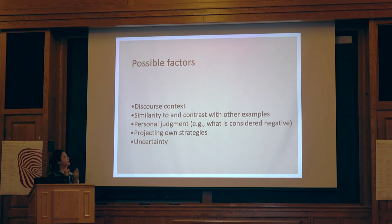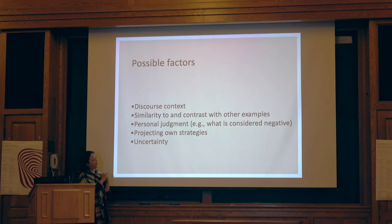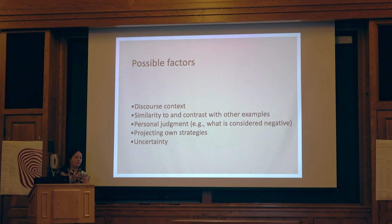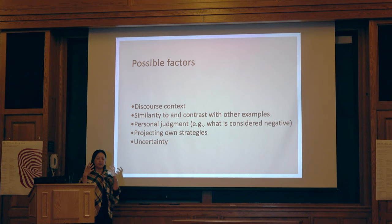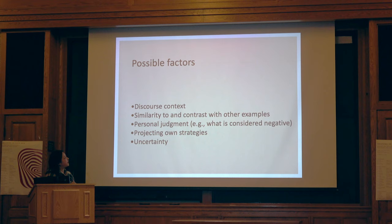Here are some of the things going on in their minds. First, they're thinking about discourse context — where in that excerpt shimau appears and what has been said before. And similarity to and contrast with other examples. They may use analogy with previously presented examples, answering the same way to be consistent. Also, personal judgment about what is considered negative is very dependent on the individual — there are individual differences, which is not a trivial matter. And projecting own strategies: 'she must be doing this because I would do this in this context.'